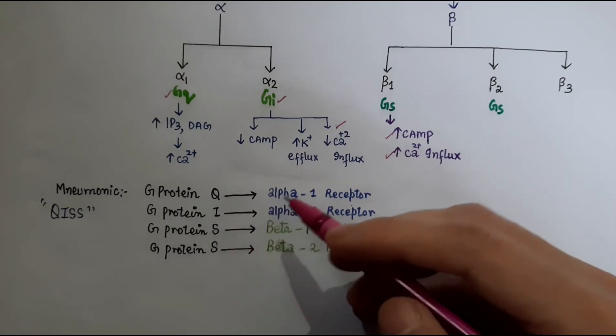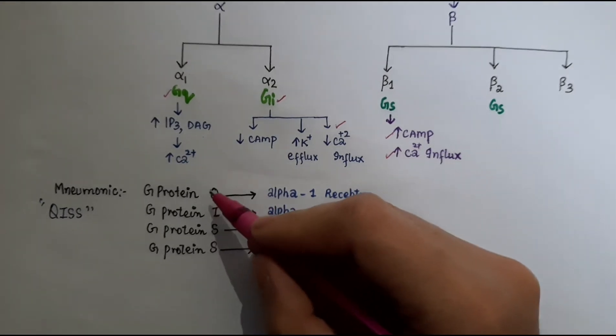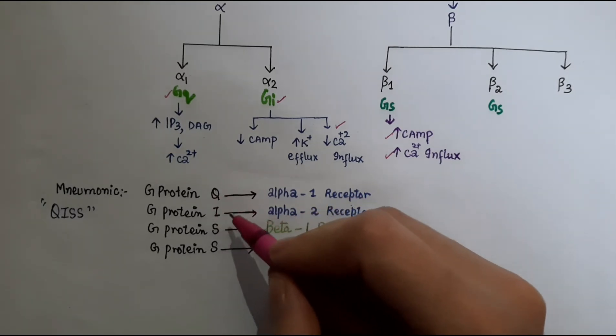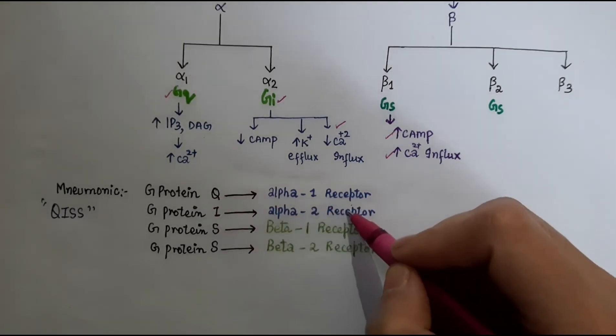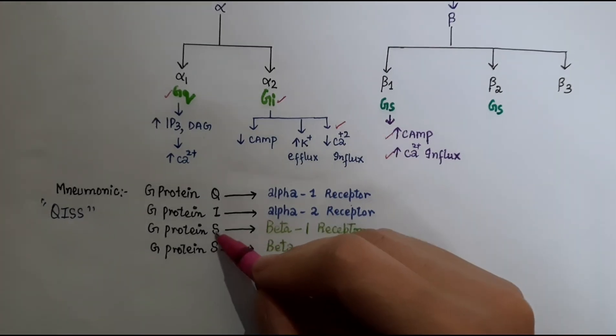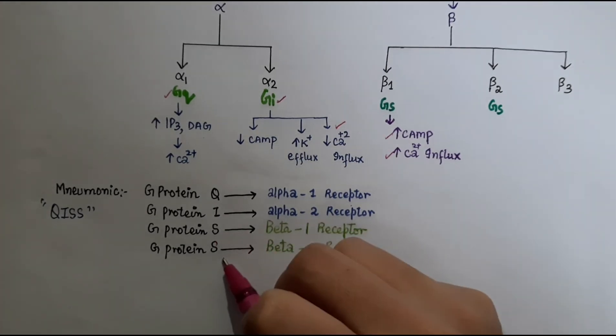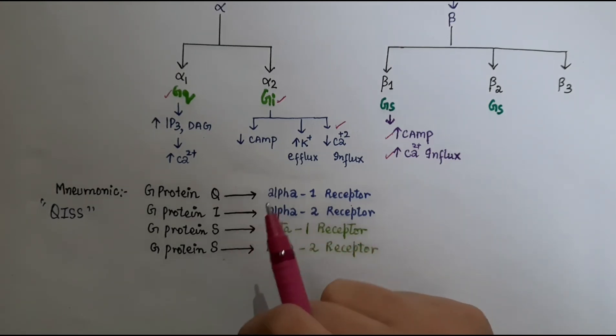To summarize: Alpha-1 is linked with Gq form of G-protein, alpha-2 is linked with Gi form, and beta-1 and beta-2 are linked with Gs stimulatory form of G-protein. In the next lecture,